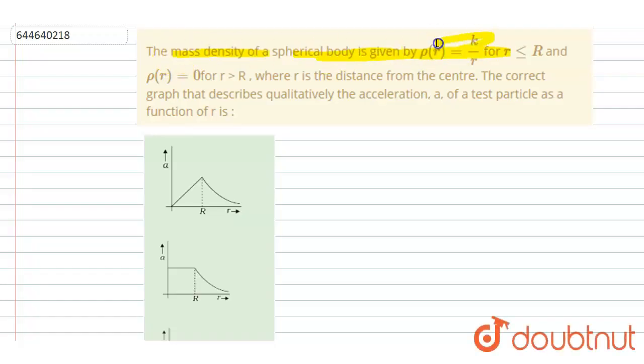...k by r, where r is less than capital R, and it is zero for r greater than capital R. r is the distance from the center. The correct graph that describes quantitatively the acceleration of a particle as a function of r.